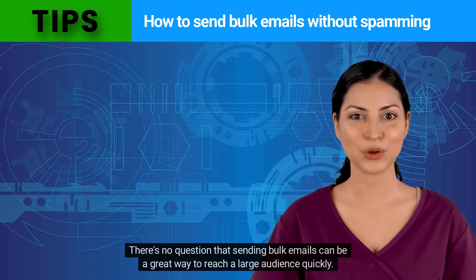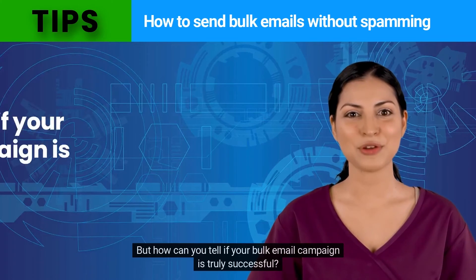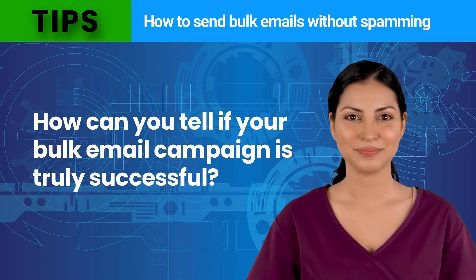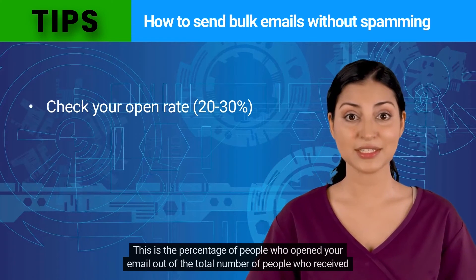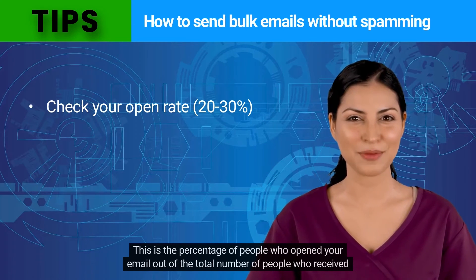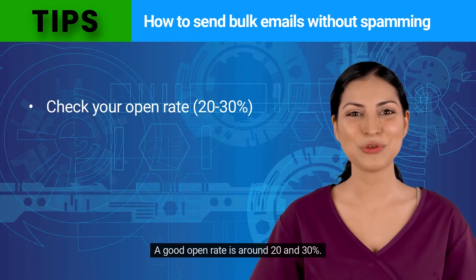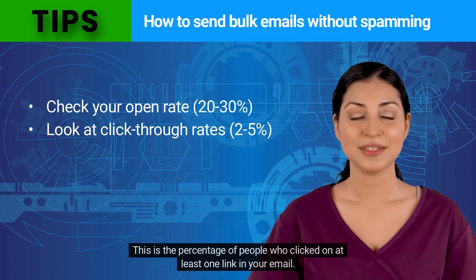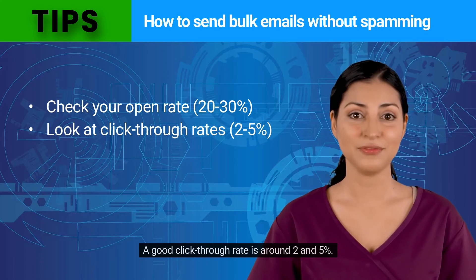There's no question that sending bulk emails can be a great way to reach a large audience quickly, but how can you tell if your bulk email campaign is truly successful? Here are a few tips. Check your open rate — this is the percentage of people who opened your email out of the total number who received it; a good open rate is around 20 to 30 percent. Look at click-through rates — this is the percentage of people who clicked on at least one link in your email; a good click-through rate is around 2 to 5 percent.